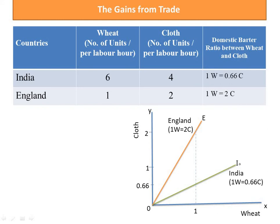In this diagram, the line OI is drawn based on the domestic barter ratio between wheat and cloth in India, where India offers one unit of wheat for 0.66 units of cloth. The line OE is drawn based on the domestic barter ratio between wheat and cloth in England — the offer curve of England — indicating that England offers two units of cloth for one unit of wheat. The trade between India and England will be mutually beneficial if trade occurs at any terms of trade between the two offer curves OI and OE.